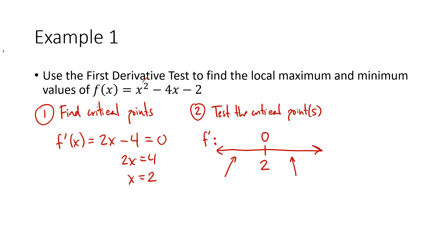I'm going to choose a number less than two — I'll choose zero because it's easy to plug in. So f prime of zero is going to be two times zero minus four. Make sure you're plugging into the derivative, not the original function, because I want to know what's happening to the slope. The slope here is negative four — and all I really care about is that it's negative, so I put little minus signs on my number line.